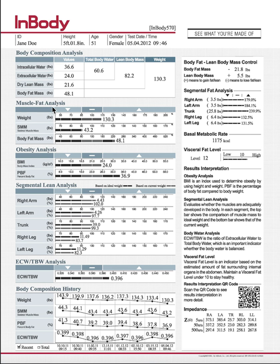Next, you want to look at the muscle-fat analysis. This shows your weight, muscle mass, and body fat. The orientation of these lines shows what your body might look like. If you have a C-curve like this woman does, it just means your weight and body fat is higher than we want, and your muscle mass is lower than we want — so we want to bring muscle mass up and weight and body fat down.